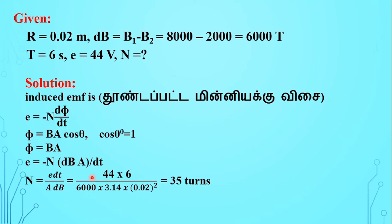Finally we get N is equal to e dt divided by A dB. So in this term it goes to numerator, this term comes to denominator. N is equal to minus e dt divided by A into dB.